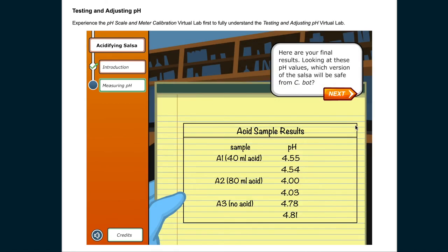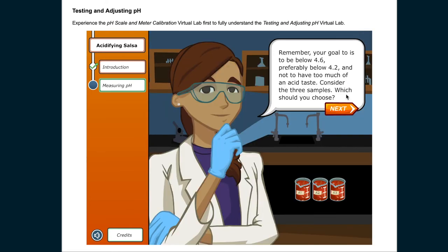Here are your final results. Looking at these pH values, which version of the salsa will be safe from CBOT? Remember, your goal is to be below 4.6, preferably below 4.2, and not to have too much of an acid taste. Consider the three samples. Which should you choose?